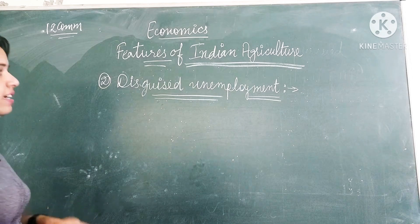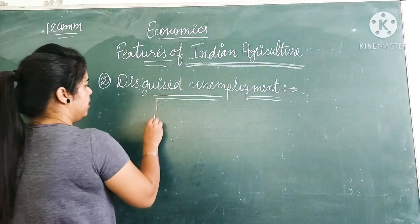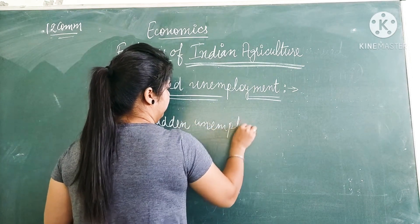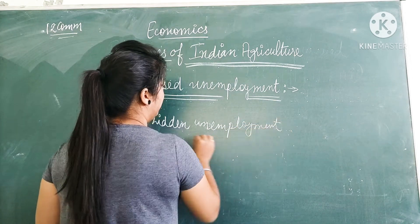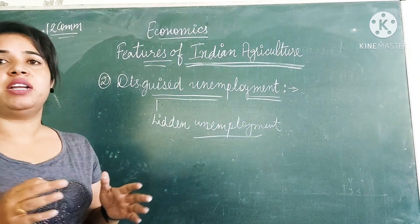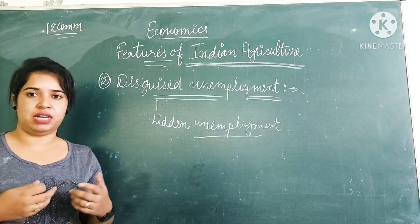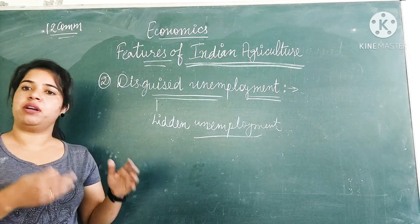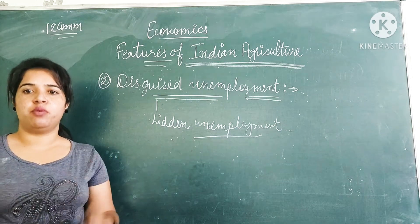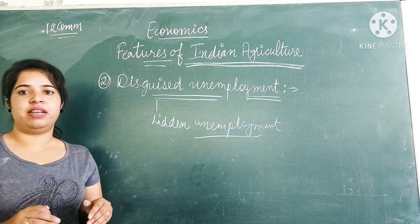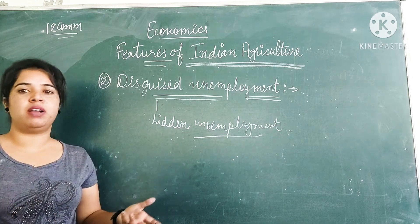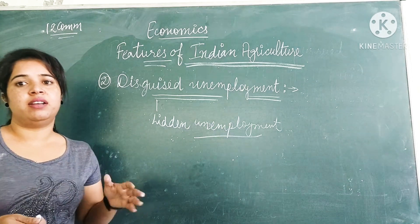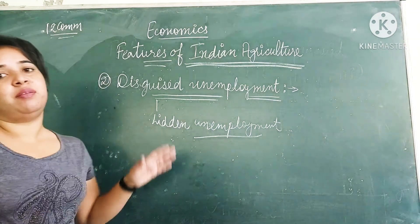The next feature is disguised unemployment, which can also be called hidden unemployment. Disguised unemployment means people seem to be actually working, but in actual fact they are unemployed — productivity would not be affected even if they were removed from the work. In Indian agriculture, more people are working on the surface than are actually required, which is why disguised unemployment is present.